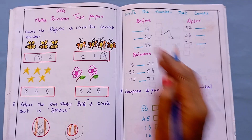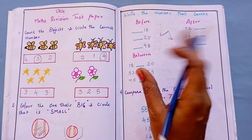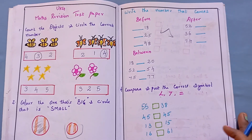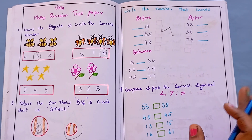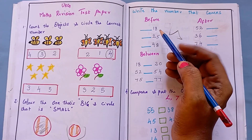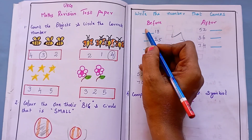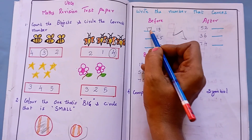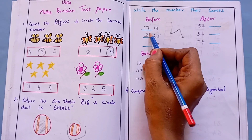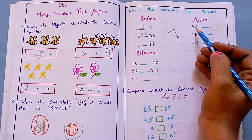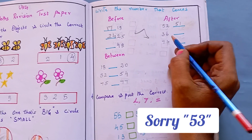The third question is: write the number that comes before, after, and between. Here I have given some numbers, and the kid has to find the number which comes before, after, and between, and write it. The first one is 18 — what comes before 18 is 17, so the kid has to write 17. Here it is 25 — before 25 is 24. After 52 comes 51, so they have to write 51 here.